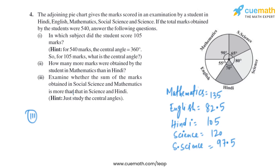Part 3 asks us to examine whether the sum of marks in Social Science and Mathematics is more than that in Science and Hindi, by studying the central angles. The central angles of Social Science and Mathematics are 65 degrees and 90 degrees, which sum to 155 degrees. The central angles of Science and Hindi are 80 degrees and 70 degrees, which sum to 150 degrees. Since 155 is greater than 150, the sum of marks in Social Science and Mathematics is more than that in Science and Hindi.